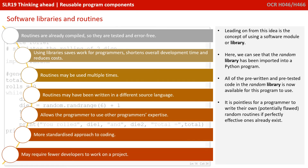Using pre-written routines compiled together into software libraries has many advantages. As we said, they're already compiled, so they're tested and error-free. Using libraries therefore saves work for programmers, shortens overall development time, and reduces costs. The routines may be used multiple times, and they could even have been written in different programming languages. This therefore allows programmers to take advantage of other programmers' expertise. It's a more standardised approach to coding, and it can end up resulting in fewer developers being needed to work on a project.